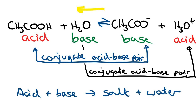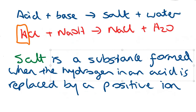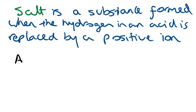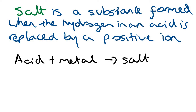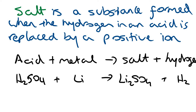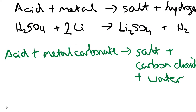Now let's recap the reactions of acids. The first reaction is acid plus base to form a salt and water. A salt is a substance formed when the hydrogen in an acid is replaced by a positive ion, usually a metal ion or an ammonium ion. The second reaction is acid plus a metal, which gives a salt plus hydrogen. For example, H2SO4 plus lithium gives lithium sulfate plus hydrogen.